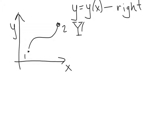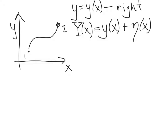We'll call this perturbed function capital Y of x, and we'll say that it's the right function y of x plus a perturbation term η of x. So instead of choosing the right path y of x, shown here in black, we'll choose a path that's pretty close to y of x but not quite. That's going to give us a path length which is bigger than the right value.